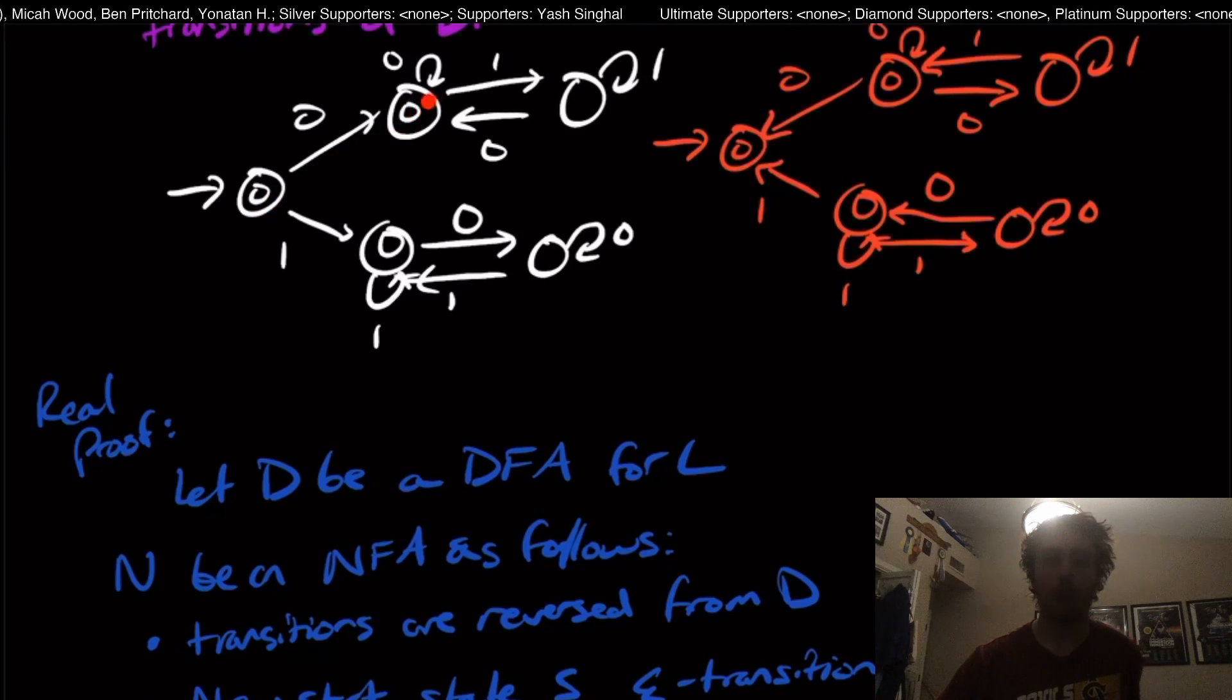Then if we want to recognize or accept a string W right here, and we want to accept the string that's the reverse one. Well, if you think about what a DFA does, you start in the start state, and you just follow the set of transitions until you reach the final state.